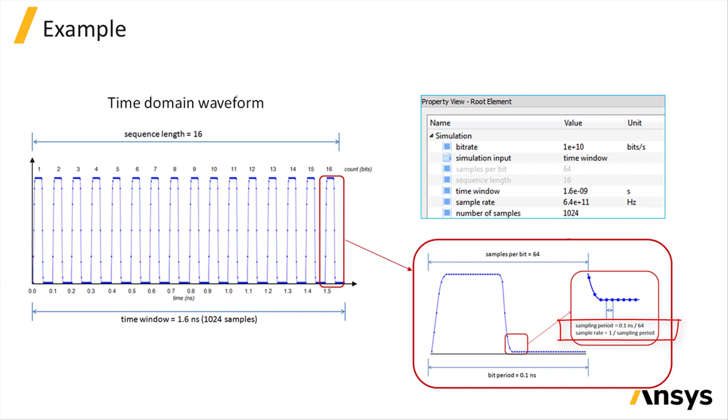Note that 1 over the sample rate is the sample period, which is the time between samples. Special care must be taken when setting the sample rate, particularly for transient sample mode simulations.